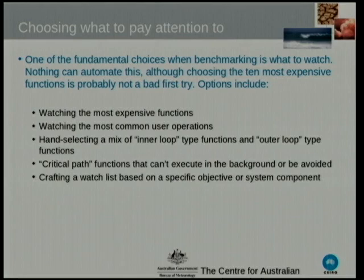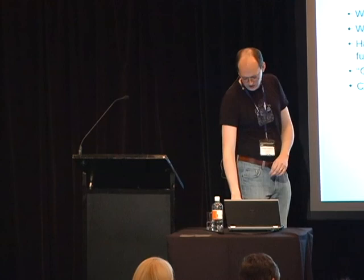Hand-select a mixture of inner loop and outer loop things. You might want to look at how long your whole test suite takes, how long some complicated thing takes, and then look at some small contributory factors you might want to highly optimise — critical path functions. If you have a GUI application, watching how fast Qt lays out its dialogues may not be what's actually slowing the user down. It might be the 10-minute background task you've got to submit to your database.